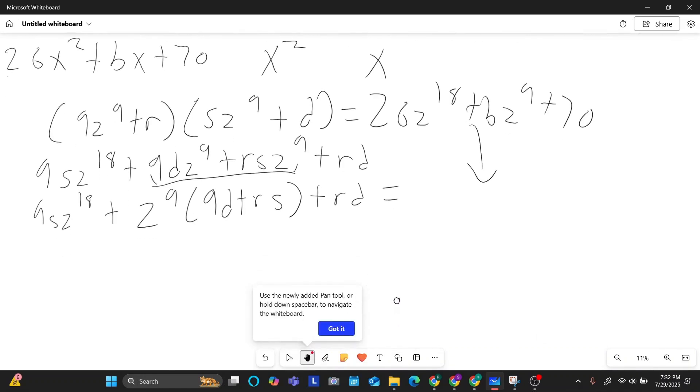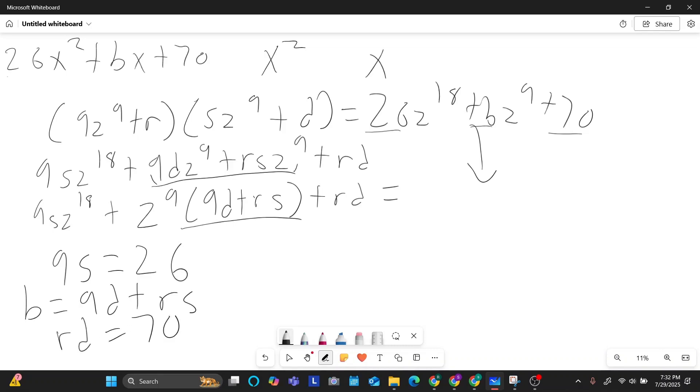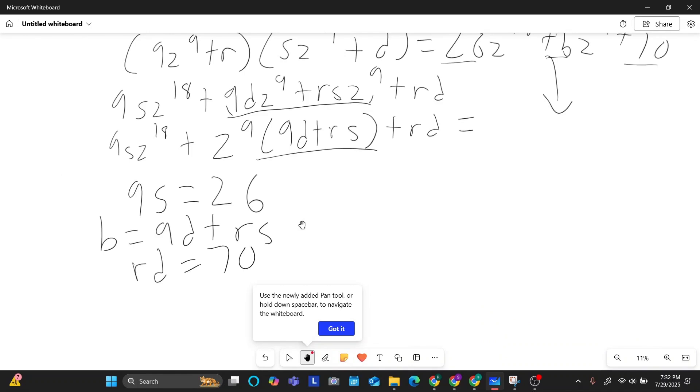Okay, so next step, we basically have a foiled out version, and then we have a simplified version. So what I can do is I can set these constants that I have on the left side, equivalent to these actual variables and numbers that have on the right side. So basically, qsz to the 18 and 26z to the 18, that would just mean that q times s is going to be 26. And then you have bz, right? So that b, you have bz to the nine. So that b term would just be qd plus rs. So b equals qd plus rs. And then the c term 70 equals rd. So this is what we're working with right now.